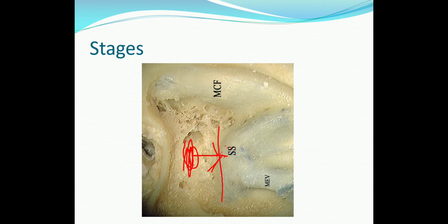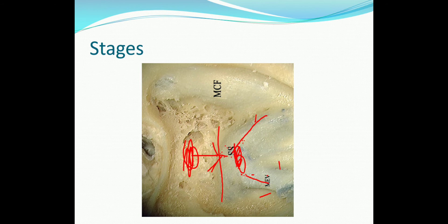In the second stage — endophlebitis and mural thrombus formation — the disease spreads to the inner wall of the sinus leading to thrombus formation within the lumen. In the third stage, the mural thrombus enlarges causing occlusion of the sinus lumen, leading to intrasinus abscess which may cause septicemia. The fourth and final stage is extension of the thrombus proximally and distally.